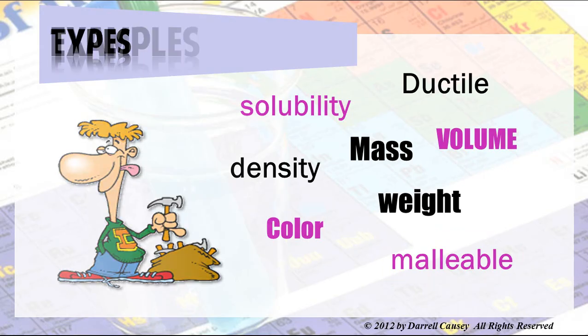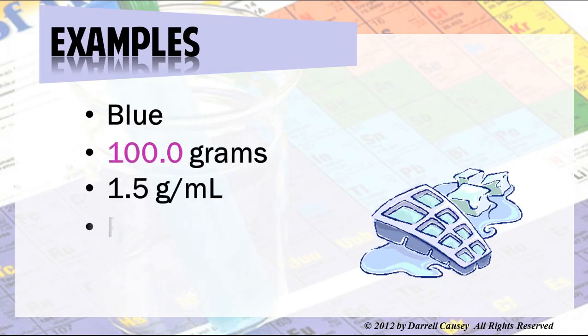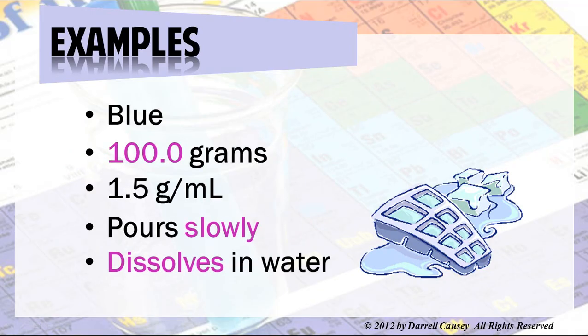Examples of physical properties: blue is a color, 100 grams is a mass, 1.5 grams per milliliter is a density, pours slowly is a way of describing its viscosity, and dissolves in water has to do with its solubility. These are all examples of physical properties — in physical properties there's no new substance.